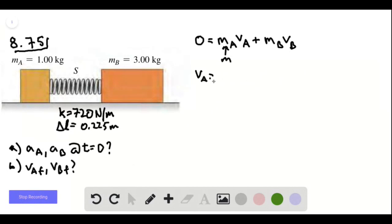So va is going to always be negative 3 times vb. And this makes sense because this is 3 times heavier, so it should be going 3 times slower.